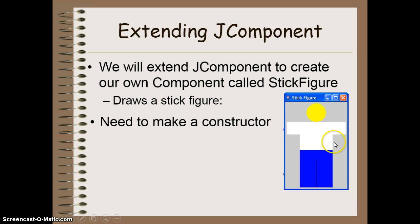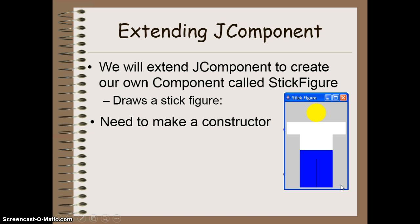To do this, we first have to make a constructor for our component, just like any other object that we try and create. And then we also need to override a particular method found in the JComponent class called paintComponent. This particular method is the method that's responsible for drawing or displaying the graphics of a particular component. So when we override this, we can provide all of our own instructions on how to draw the component that we're trying to create.